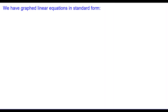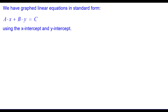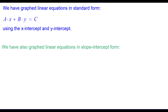So far we have graphed linear equations in standard form — a times x plus b times y equals c — using x-intercepts and y-intercepts. We have also graphed linear equations in slope-intercept form, equations of the form y equals mx plus b, using slope and y-intercept.